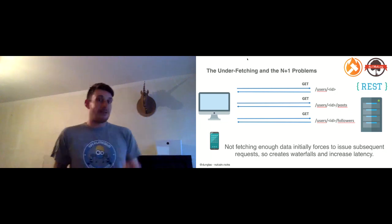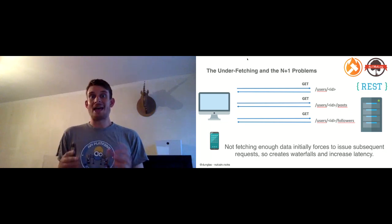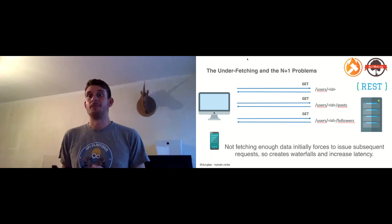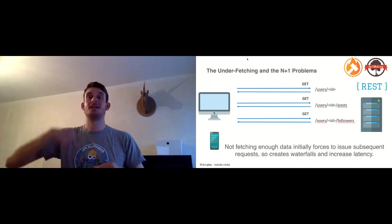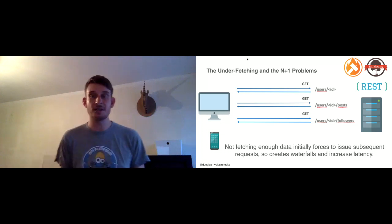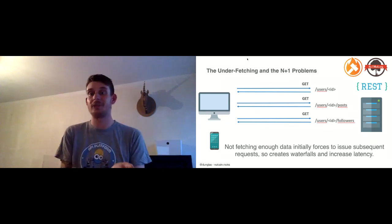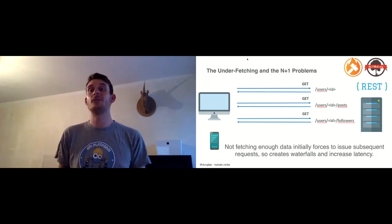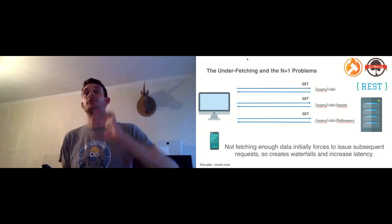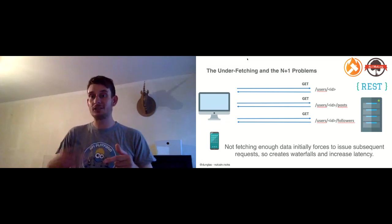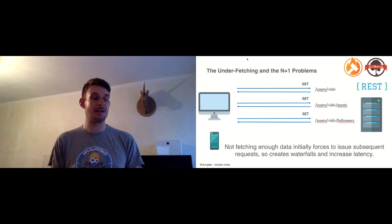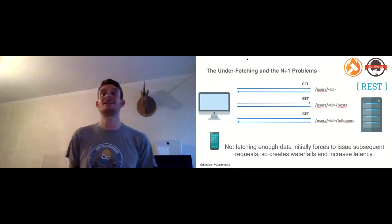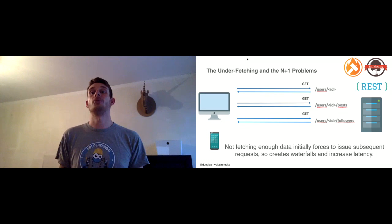There is another related problem: every time I need a parent of a relation, I need an extra request. If I have a collection and I want to retrieve every post of that collection, I need to make a request for the collection and then a request for each item. This is a very well-known issue with REST APIs that can produce waterfall requests.